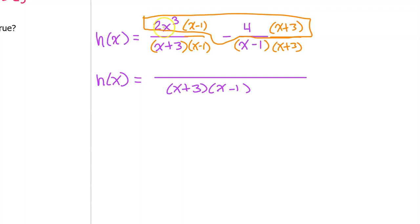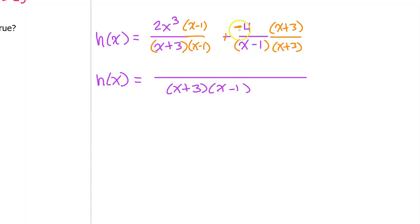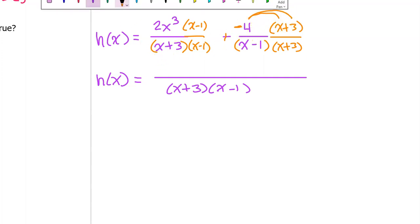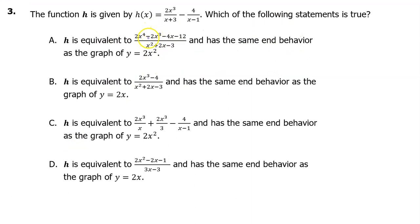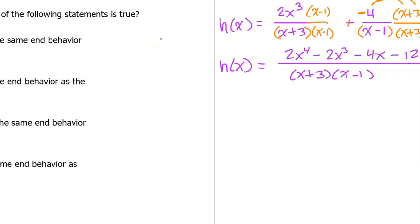This is really 2x to the third power times x minus 1, minus 4 times x plus 3. It's safer to move the negative sign so you distribute a negative 4. For the new numerator: 2x to the third power times x is 2x to the fourth power; times negative 1 is negative 2x to the third power. Then negative 4 times x is negative 4x, and negative 4 times 3 is minus 12. There are no like terms, so the answer is probably A because the numerator matches what we just found.